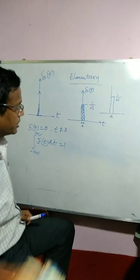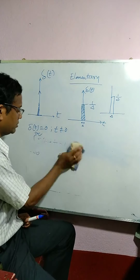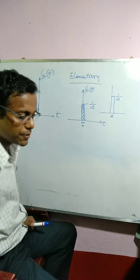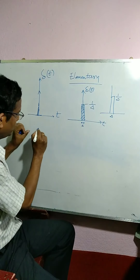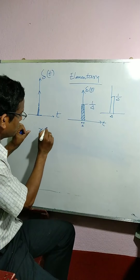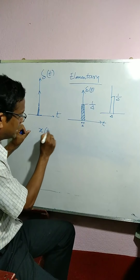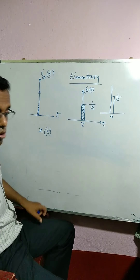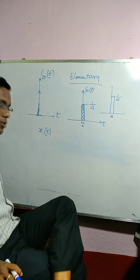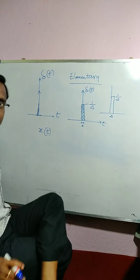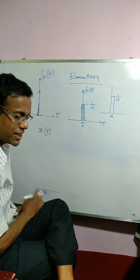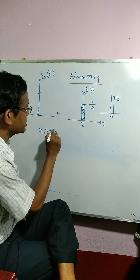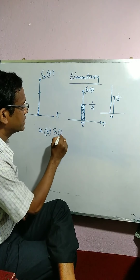It has several important properties. Let me tell these properties to complete the unit impulse. One is, if you try to multiply a signal — written as x(t) in the notes — we have x(t), and we are multiplying this signal with delta(t).